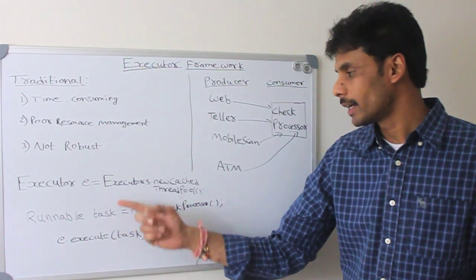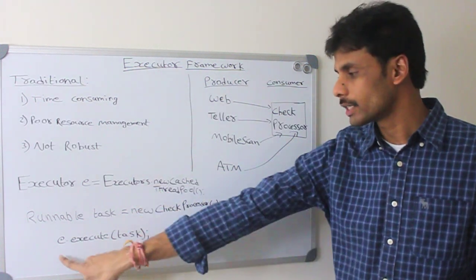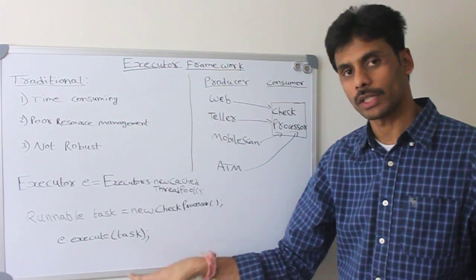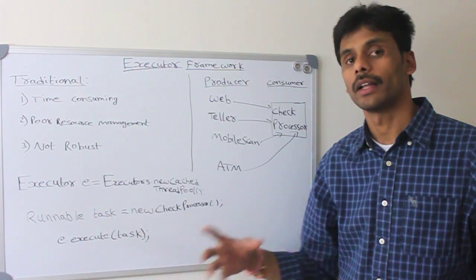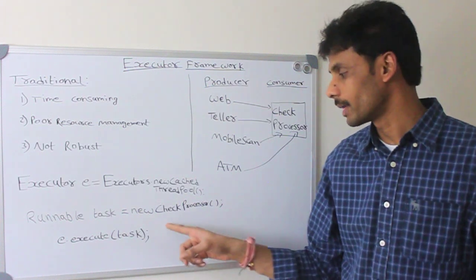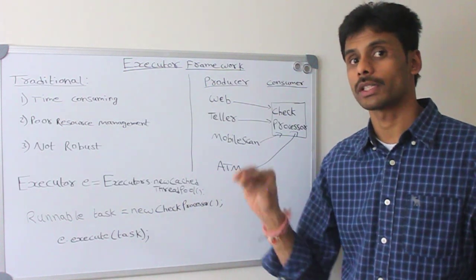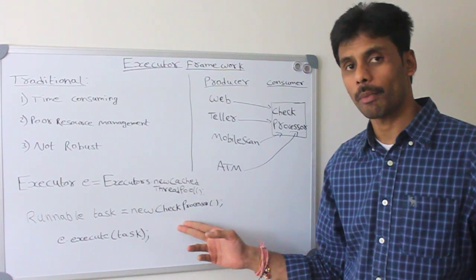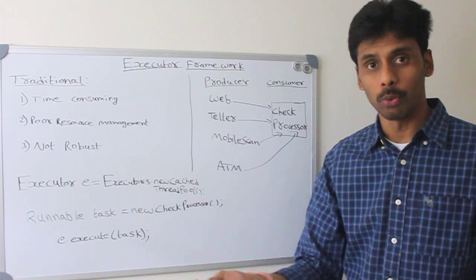Once I create a task and the thread pool, all I do is simply say threadpool.execute, give it my runnable task, the check processor task to it. And the executor framework will spawn a new thread for me. And when my check processor is done with processing a check or multiple checks, depending on how I write my run method in the check processor, that particular thread will go back to the pool.